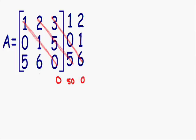After we multiply these diagonals we need to do the exact same thing with the diagonals going the opposite way. We have three diagonals going the opposite way. Multiplying these: we have 5 times 1 which is 5, and 5 times 3 is 15. In the second diagonal, 6 times 5 is 30, and 30 times 1 is 30. In the third diagonal, 0 times 0 is 0, and 0 times 2 is also 0.